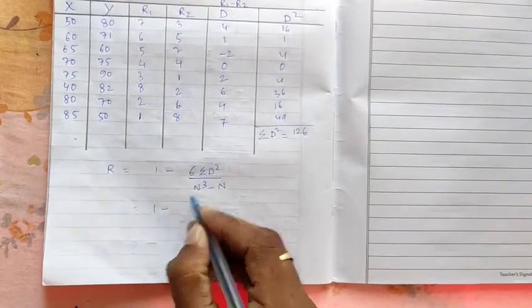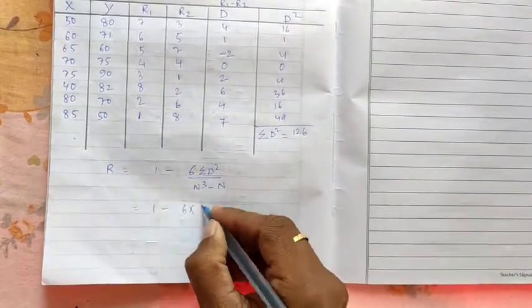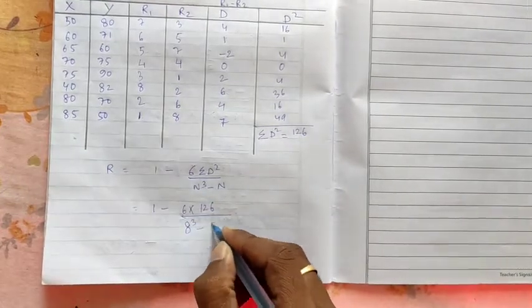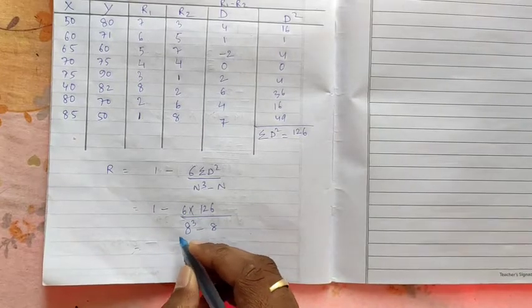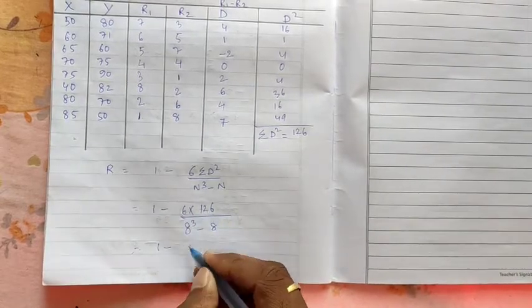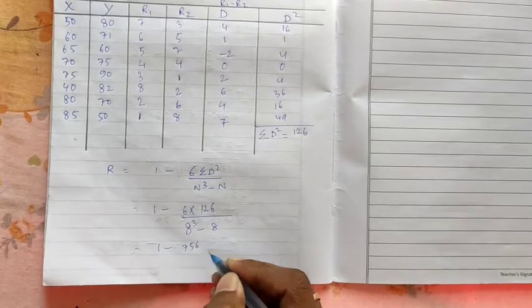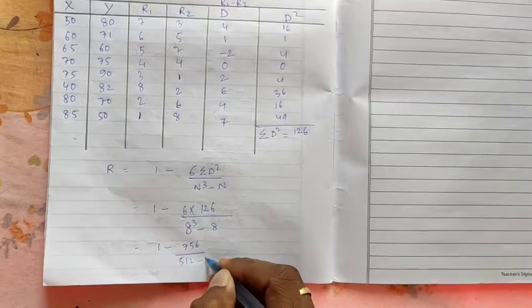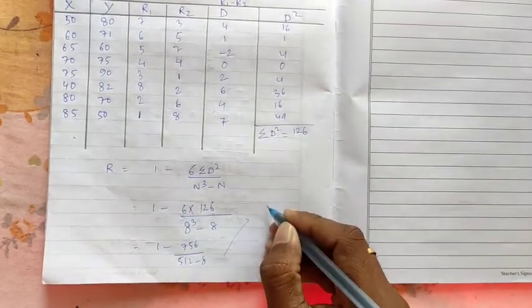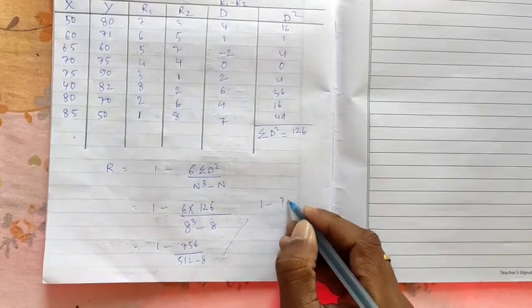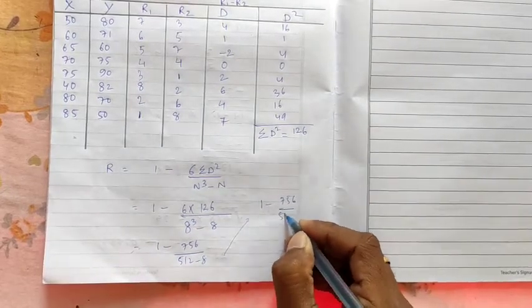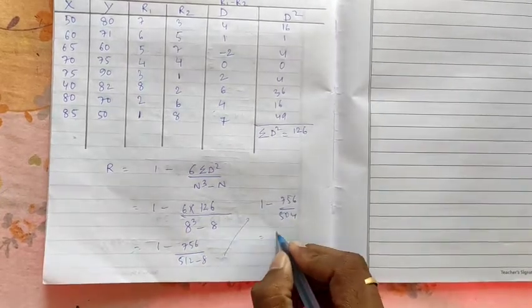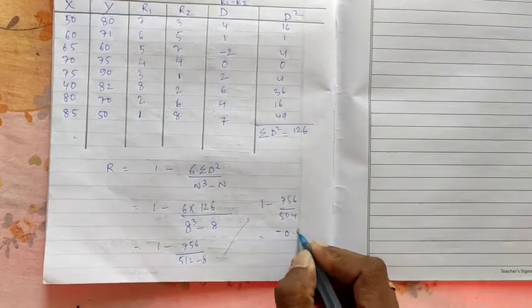So 1 minus 6 into summation d square is 126. So 126 divided by n. 8 cube minus 8. So 8 cube is how much? 512 minus 8. So I'm doing it here. So 1 minus 756 by 504. So when we divide it, we will get minus 0.5.